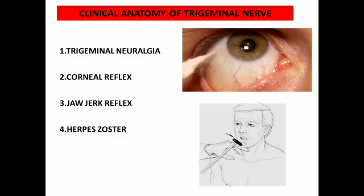The jaw jerk reflex: the patient opens the mouth slightly and the examiner places an index finger on the chin and taps it, causing bilateral contraction of the masseter muscles. The afferent limb carries proprioceptive impulses via the sensory component of the mandibular nerve to the mesencephalic nucleus, which connects to the motor nucleus of the trigeminal nerve bilaterally. The center is in the motor nucleus of the trigeminal nerve, and the efferent limb is the motor component of the mandibular nerve.